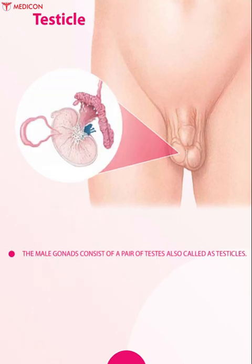Testicle: the male gonads consist of a pair of testes, also called testicles. The testicles make sperm and sex hormones, particularly testosterone.